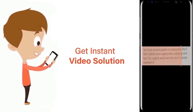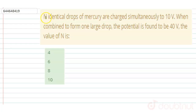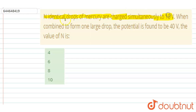Hello everyone. N identical drops of mercury are charged simultaneously to 10 volts. When combined to form one large drop, the potential is found to be 40 volts. You have to calculate the value of n.